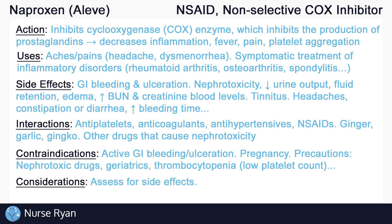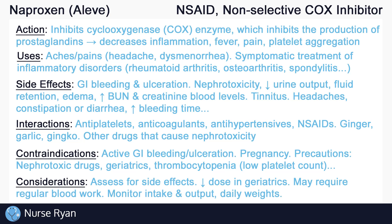Always monitor and assess for side effects of naproxen. Be aware that geriatric patients may require lower doses. Long-term therapy of naproxen may require regular blood work to monitor kidney function, liver function, and bleeding time. You may also want to monitor intake and output, and daily weights to help monitor for fluid retention. To avoid GI distress when taking naproxen, you can always take it with food.